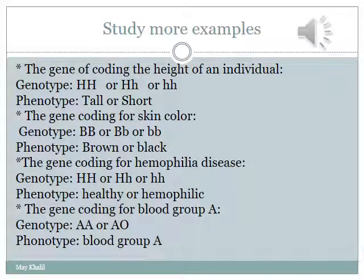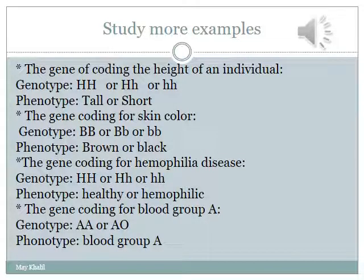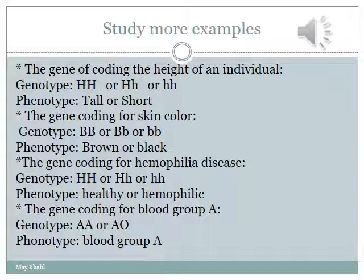Here are some examples about certain genes that may code for certain physical characteristics, such as the one which codes for height. The genotype could be written in different ways — three ways are given — but you have to know that each genotype is responsible for giving its specific phenotype.